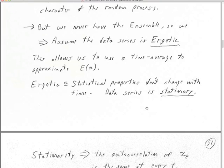I'm following Claerbout here. After saying that every member of the ensemble has the same deterministic component, he quickly forgets about the deterministic component and we're just talking about the random processes. Here I'm saying the whole data series is stationary — that's not strictly true. It can be ergodic if it has a non-stationary deterministic part; in other words, we could predict the deterministic part, take it out, and what we'd have left is just the random part, which we're saying is stationary if and only if it's ergodic.